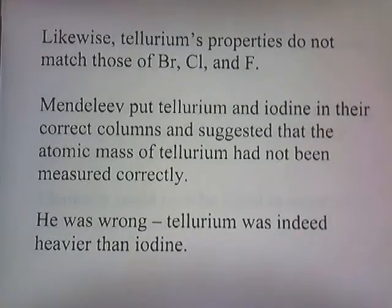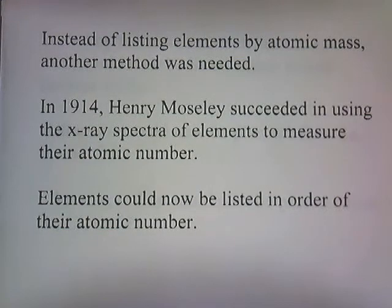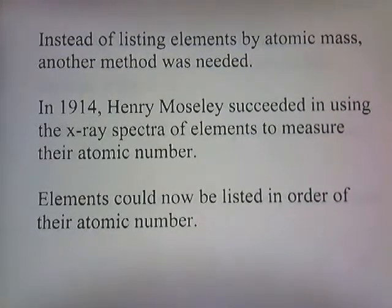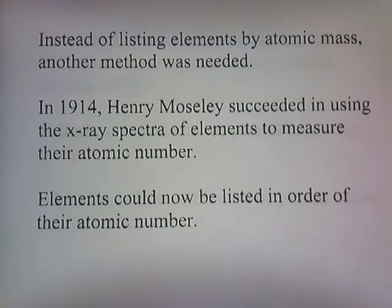So instead of listing elements by atomic mass, another method was needed. In 1914, Henry Moseley succeeded in using the x-ray spectra of elements to measure their atomic number. By zapping elements with energy and analyzing the pattern of x-rays emitted, they could measure the number of protons — the atomic number. Elements can now be listed in order of their atomic number.